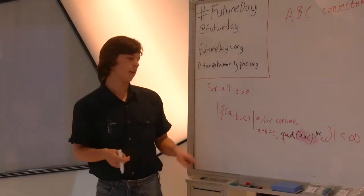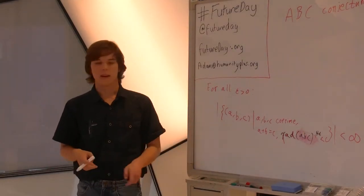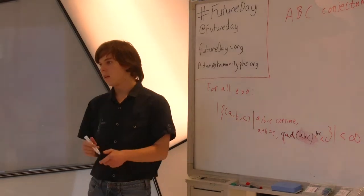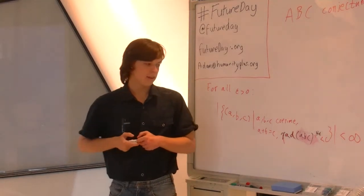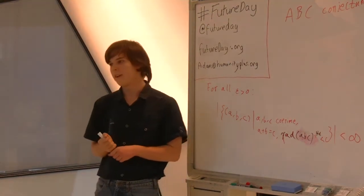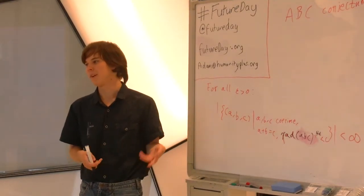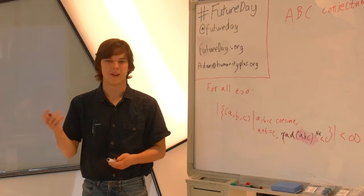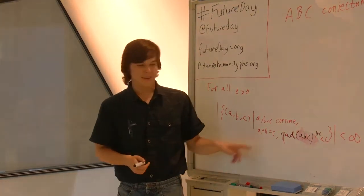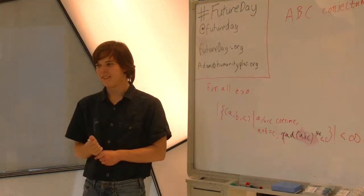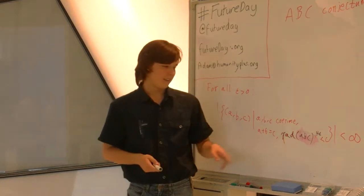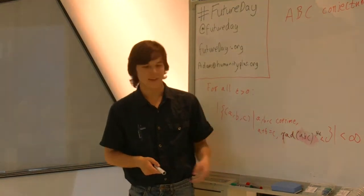What they're saying is that there's a finite number of triples satisfying these properties. Coprime means that A, B, and C share no common factors. So there's no multiple, so they're not both divisible by two, or five, or whatever. A plus B equals C, I think you can figure that out for yourself.